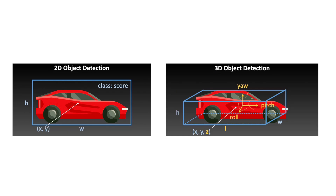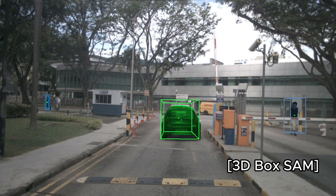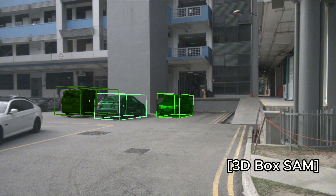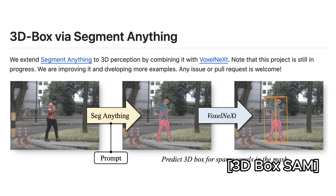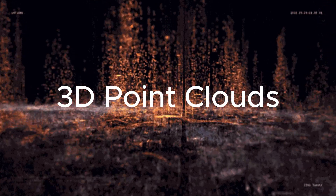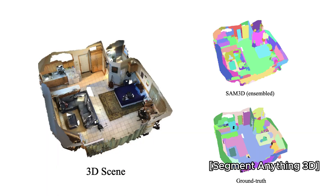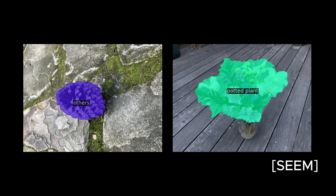SAM can apply to 3D as well. First, we can have bounding boxes in 3D — with SAM, we can enter a prompt and AI will detect 3D objects based on the text. The input goes through SAM first for some masks, and then through the detection part named VoxelNext. Besides that, SAM can deal with 3D point clouds. For a 3D scene, like a room, SAM can identify different parts in the 3D space — or some flowers, like this.